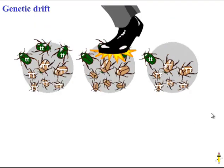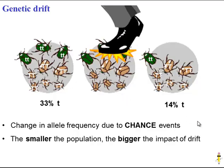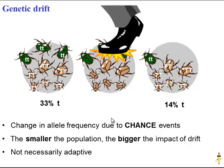The final force is genetic drift — random changes in a population. Here, a population with 33% frequency of the recessive allele is affected when someone steps on a couple of beetles, changing the allele frequency. The beetles that died weren't necessarily less fit; they were just in the wrong place at the wrong time. Drift involves chance events and is not necessarily adaptive. It has a bigger effect on smaller populations — if there were thousands of beetles, losing a couple wouldn't change allele frequency much, but in a small population it has a dramatic effect.